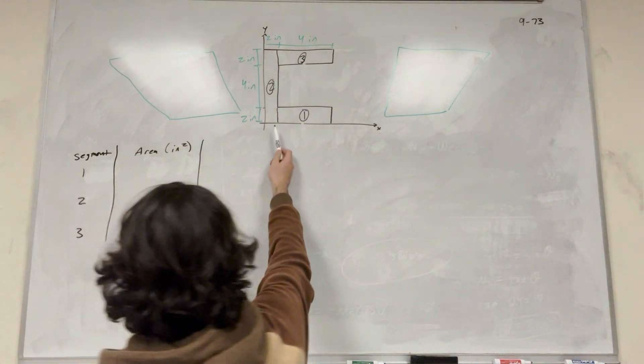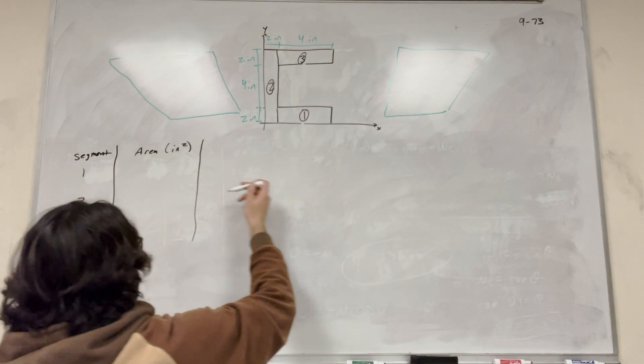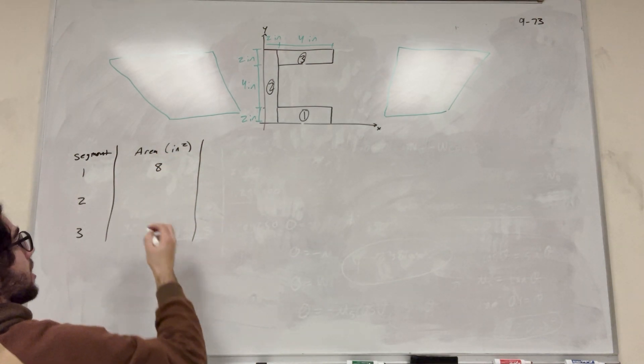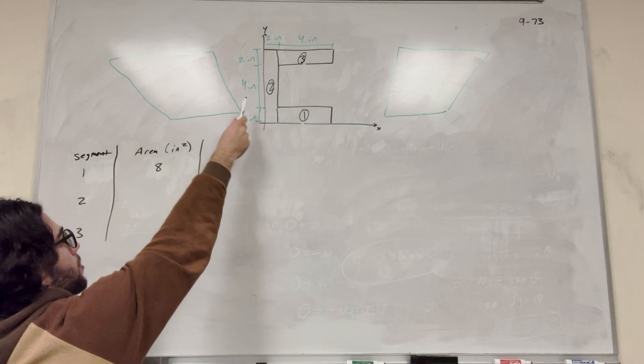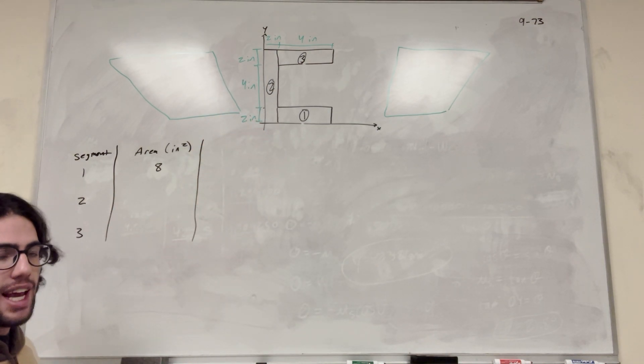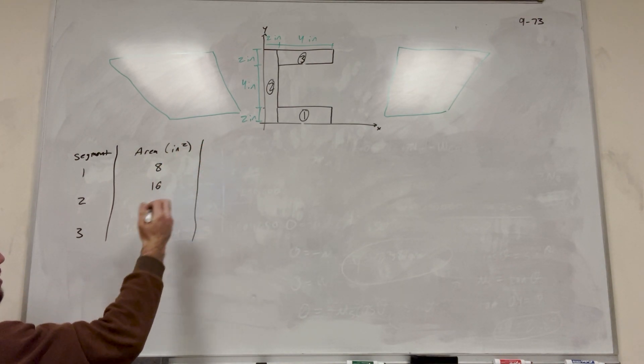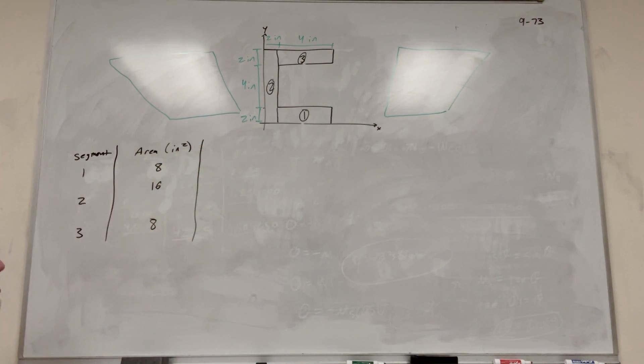So our area, this is an inch, so it's going to be an inch squared. It's good to keep your units just to make sure you know what you're doing. So let's find the area of each one of these. So the area of one is going to be two inches tall, four inches wide, so two times four is eight inches squared. This one is two plus four plus two inches tall, so it's eight inches tall, two inches wide. So two times eight is 16 inches. And then area three is going to be the same as area one, which is eight, which is just two times four.